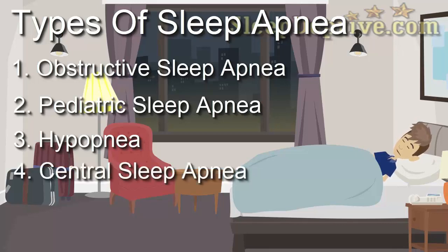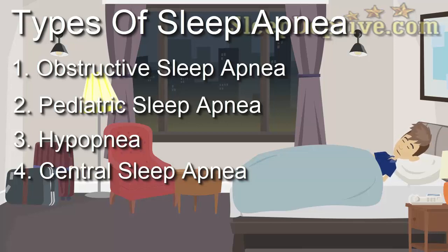The fourth type is central sleep apnea. This is the type of sleep disorder which occurs when the brain does not send proper signals to the muscles that control breathing. This is a pretty rare form of sleep apnea as very few people suffer from it.